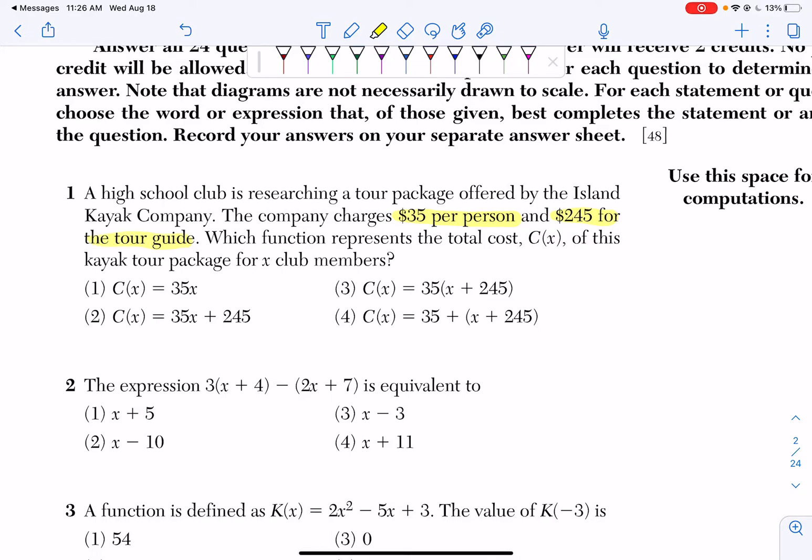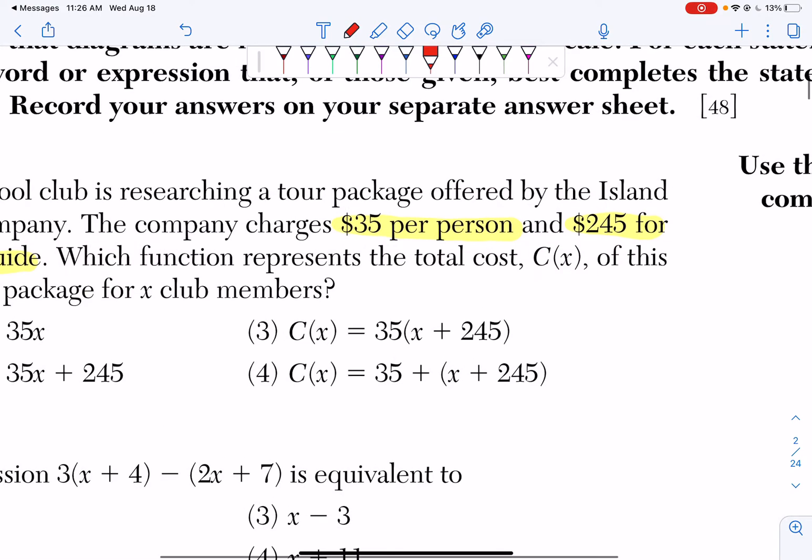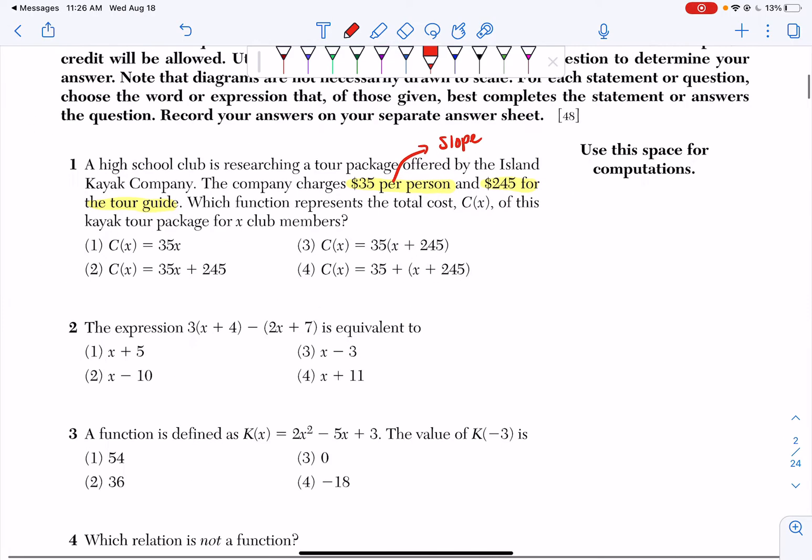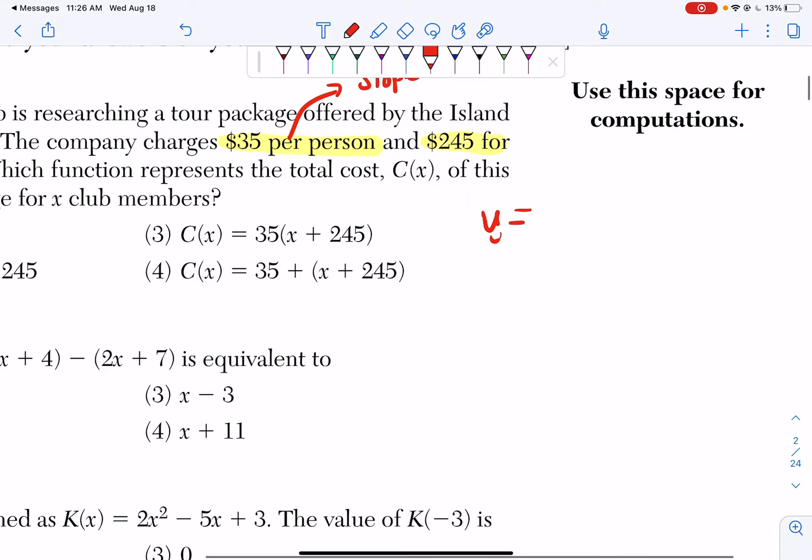They're already paying $245 just to get onto this tour. Whenever I see the word 'per,' this is a slope word. Whenever I deal with slope, I'm dealing with y equals mx plus b, where m is our slope and b is our y-intercept or our start point.